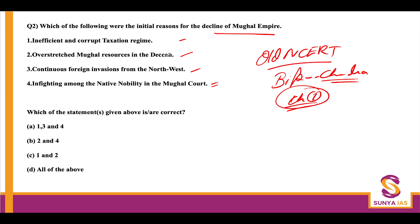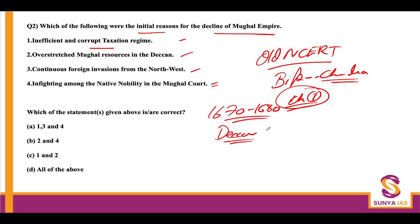The initial decline started from 1670–1680 onwards after the Mughals expanded into the Deccan and Maratha region. Their resources were extensively used in Deccan, creating stress on the Mughal exchequer (Toshkhana) and causing difficulties. So overstretched Mughal resources in the Deccan is surely one of the reasons. The inefficient and corrupt taxation system was also one of the reasons — that is true. Regarding continuous foreign invasion from the northwest: Nadir Shah invaded in 1739, and Ahmad Shah Abdali invaded repeatedly between 1748 and 1767.